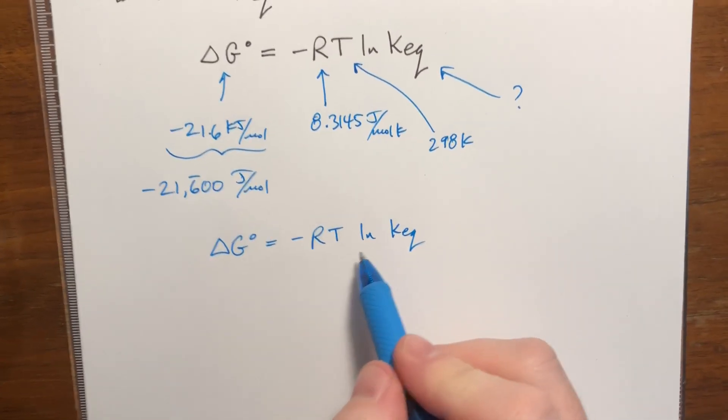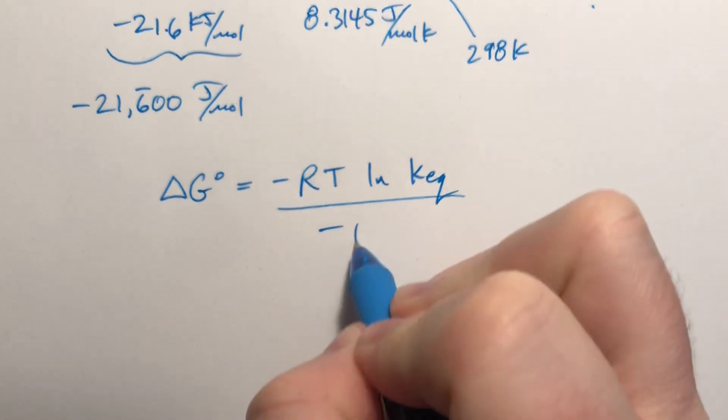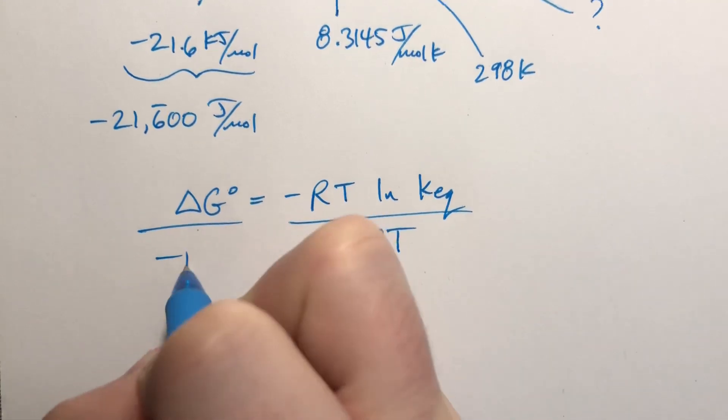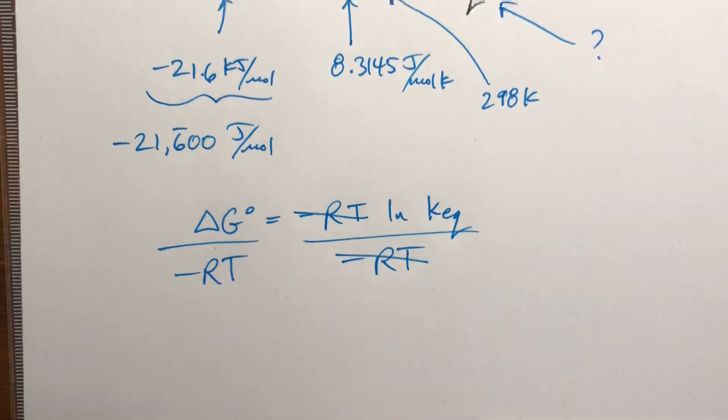We need to get rid of this natural log, but not before we get rid of this RT. So we're going to divide both sides by negative RT. So that all cancels out, that all cancels out, and we have natural log of Keq.